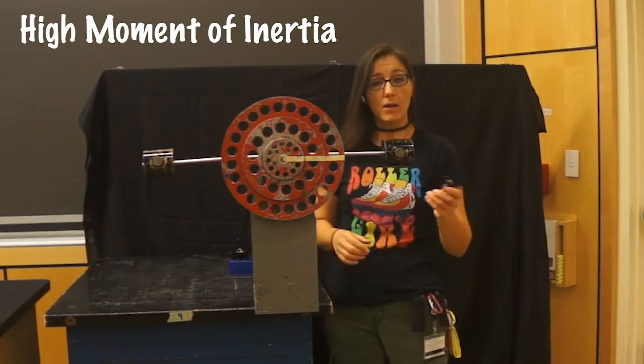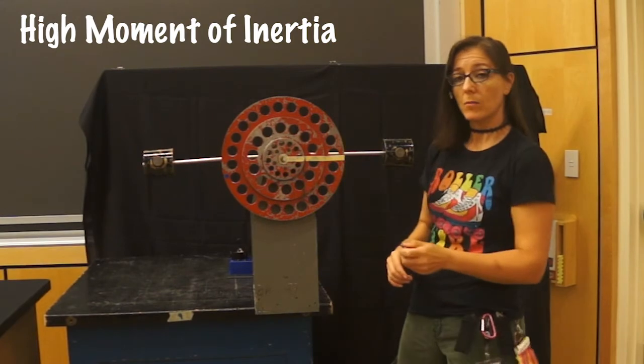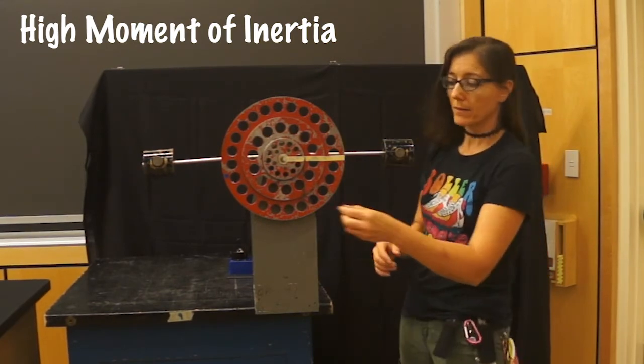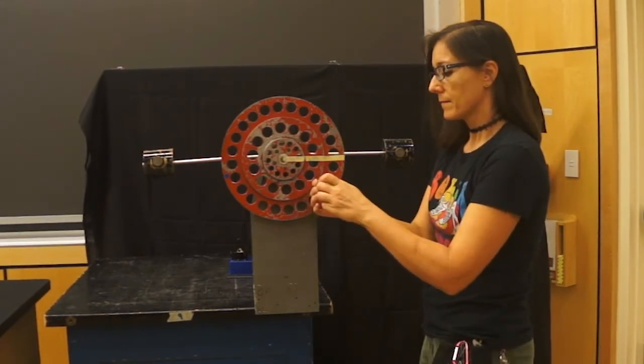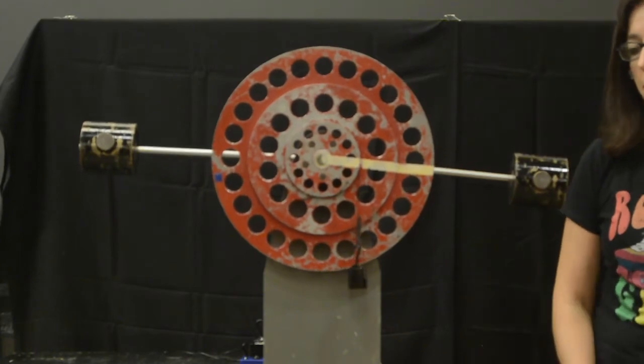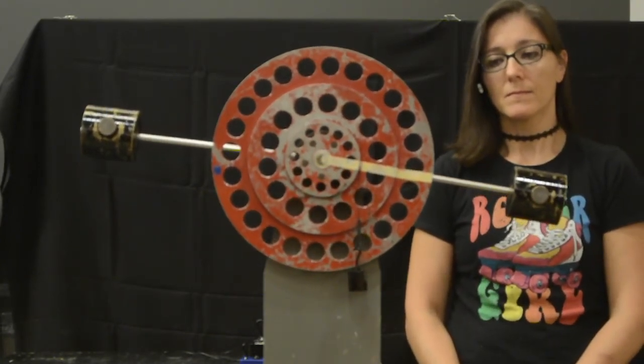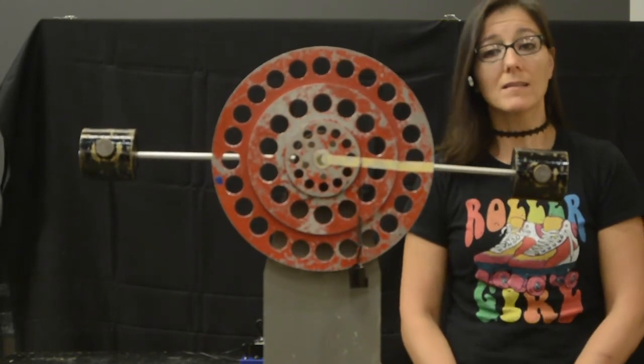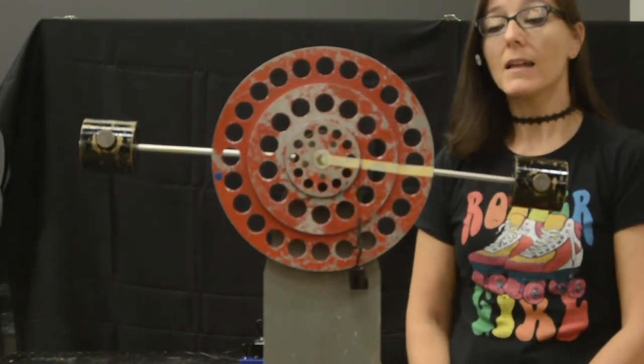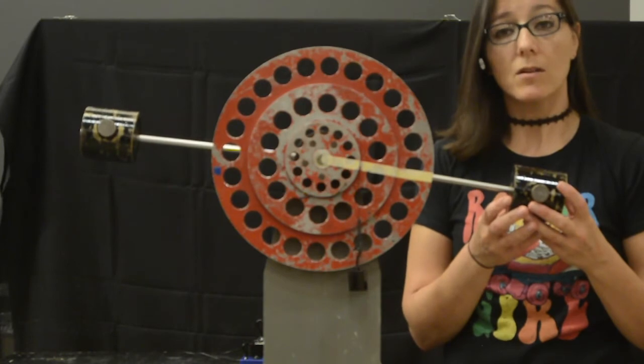Let's use the same 100-gram mass at the innermost radius and see what happens. As you can see, this mass is unable to get this inertia rotating.